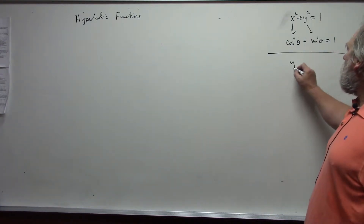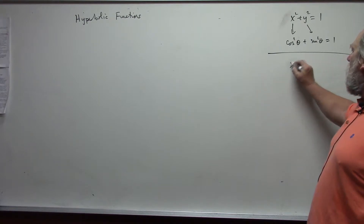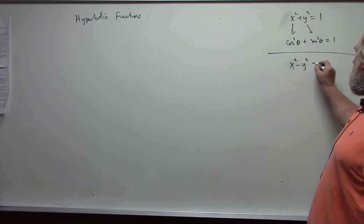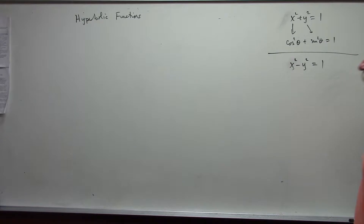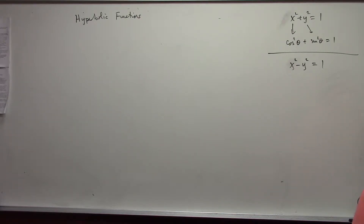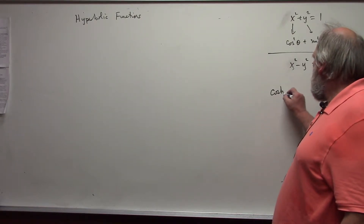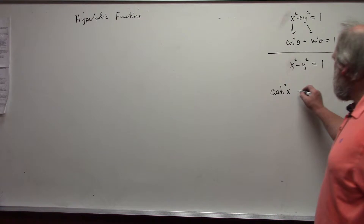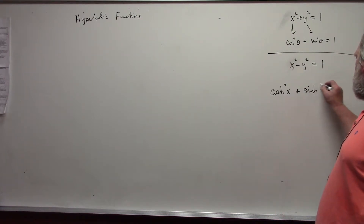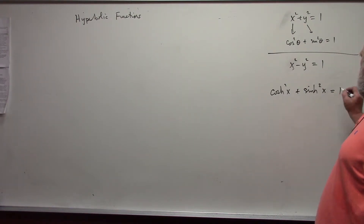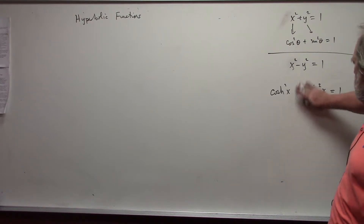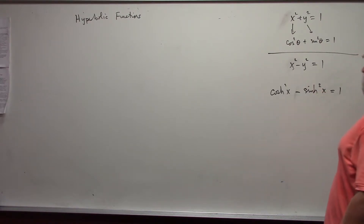We also have the unit hyperbola in the horizontal direction: x squared minus y squared equals 1. What satisfies that are the hyperbolic trig functions cosh and sinh. We have cosh squared of x minus sinh squared of x equals 1.